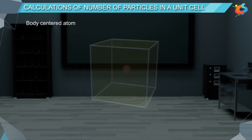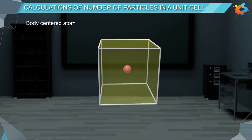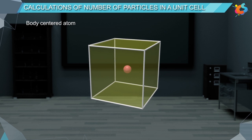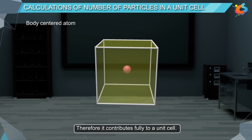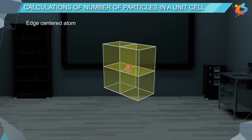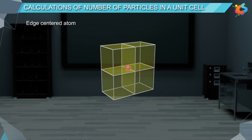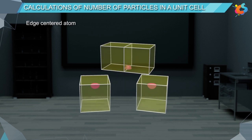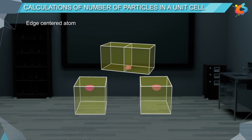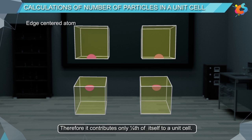A body-centred atom is not shared by any adjacent unit cell in a crystal lattice. Therefore, it contributes fully to a unit cell. An edge-centred atom is shared by four adjacent unit cells in the crystal lattice — two unit cells in the lower layer and two unit cells in the upper layer. Therefore, it contributes only one-fourth of itself to a unit cell.